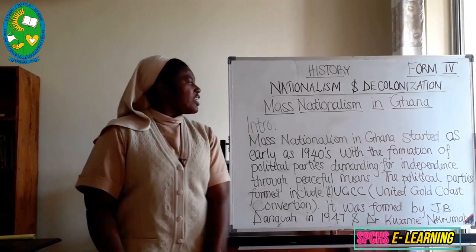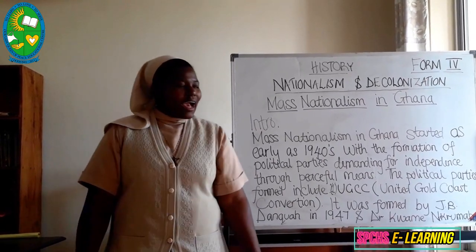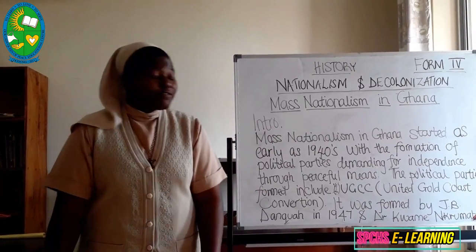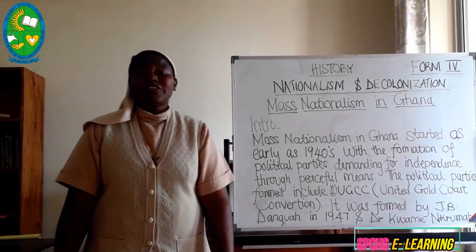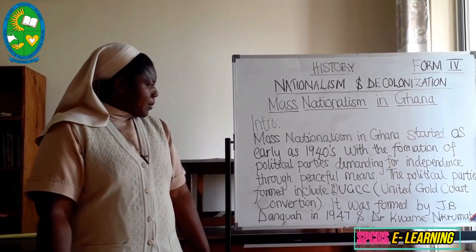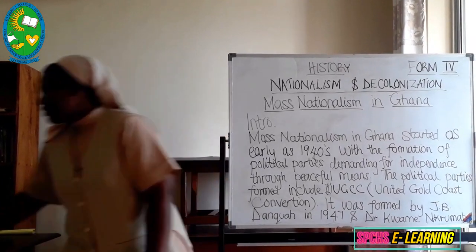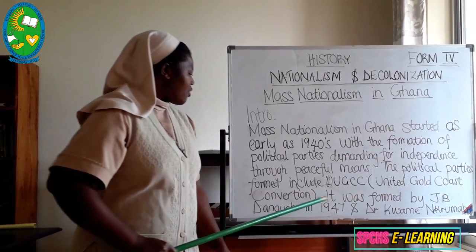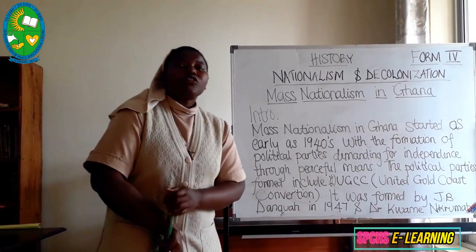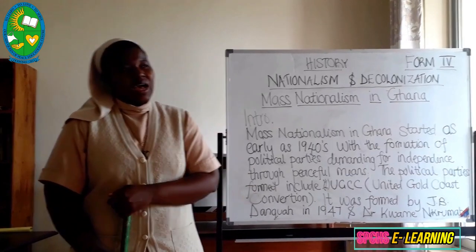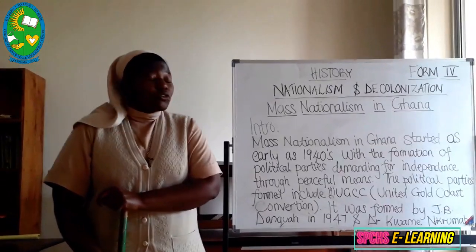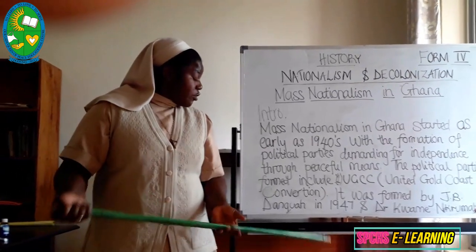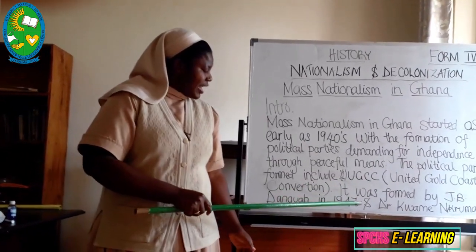Our main focus is mass nationalism in Ghana. Mass nationalism in Ghana started as early as the 1940s with the formation of political parties. The first party formed was known as UGCC — United Gold Coast Convention — founded by Danquah, with Kwame Nkrumah as its general secretary. This party was founded in 1947.